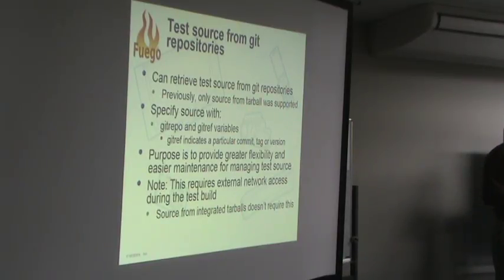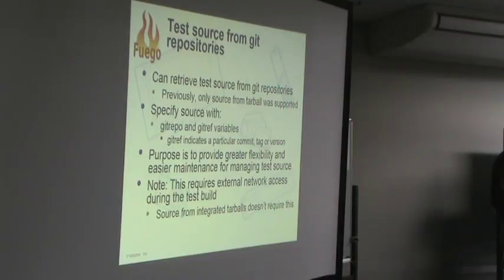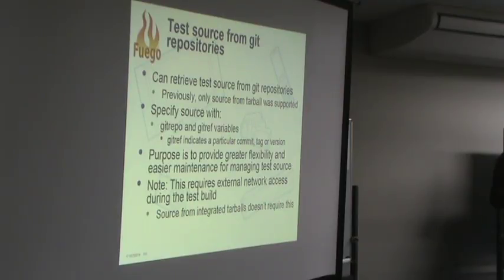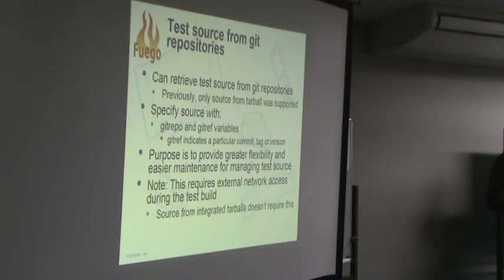Fuego can now obtain test source from git repositories. Previously, all source was included in Fuego as tarballs, but now you can specify a git repository and a specific commit, tag, or version reference. This is important because Fuego is a fairly old system — started at least four years ago — and these days code is mostly maintained in git repositories rather than tarballs. One caveat: using git source requires network access during the build, since it pulls source at test instantiation time, unlike the self-contained tarball approach.